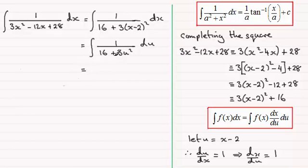When we get a number in front of the x² or u² in this case, what we do is we pull that out in front of a bracket. So we end up with 1 divided by, and then you pull the 3 out and you multiply this with 16 over 3 and then plus u². And that's integrated with respect to u.